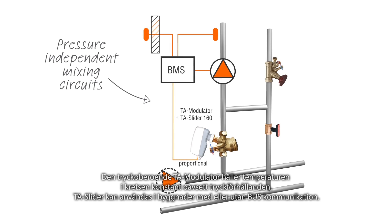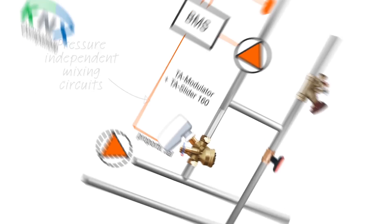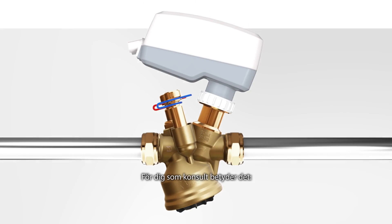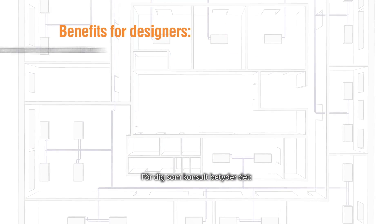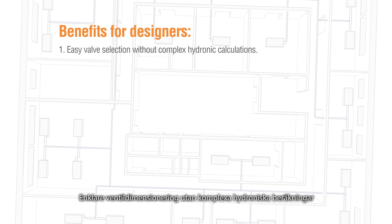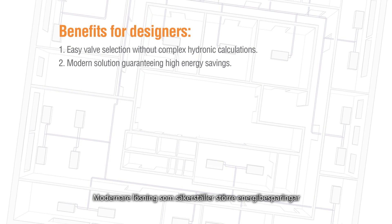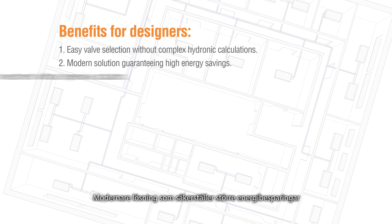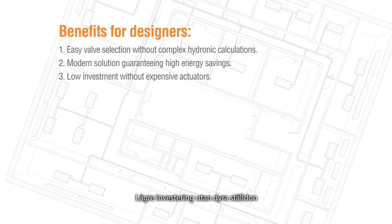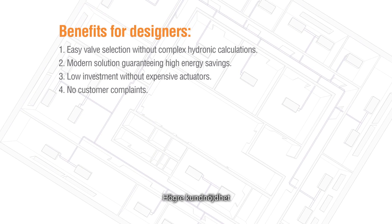The pressure independent TA Modulator keeps the temperature constant regardless of different pressure conditions in the primary circuit. TA Slider can be used in buildings with or without bus communication. For you as a designer, this means easy valve selection without complex hydronic calculations, a modern solution guaranteeing high energy savings, low investment without expensive actuators, and no customer complaints.